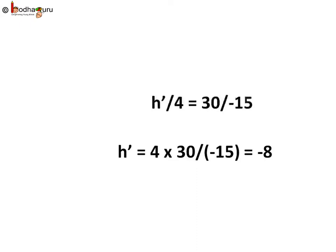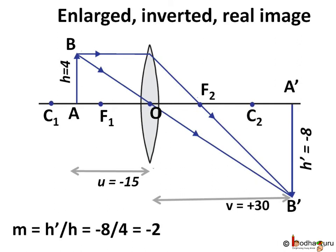So, the image formed is of 8 cm. Why negative sign? Because the image is inverted below the principal axis. And magnification M is equal to H' by H, which is equal to minus 8 by 4, which is equal to minus 2. That is, image is 2 times the object and is inverted, that is below the principal axis.